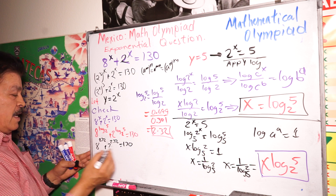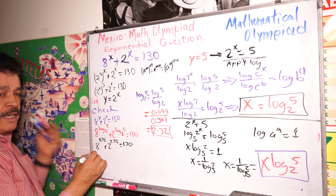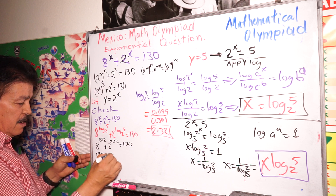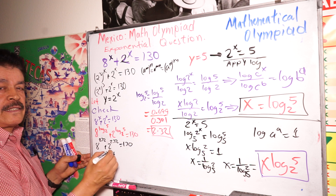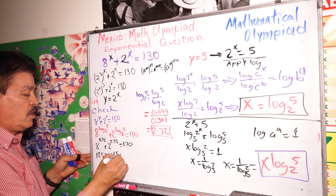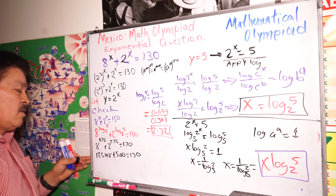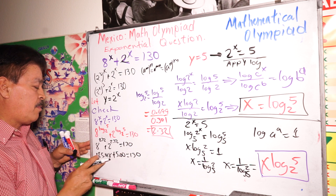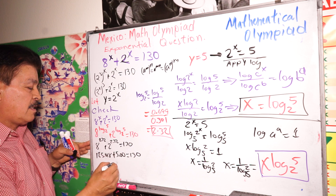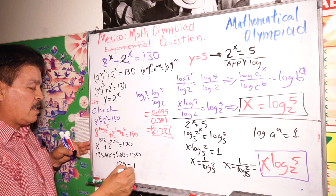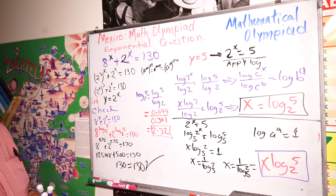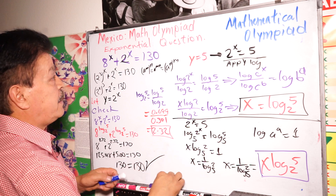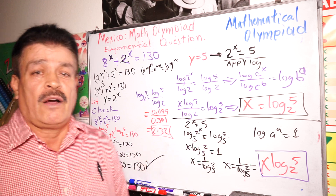The first case equals approximately 125.018, and the second one equals approximately 5.00. Adding them: 125.018 plus 5 equals 130. This confirms our answer is correct. This is a great solution to this exponential question from the Mathematics Olympiad.